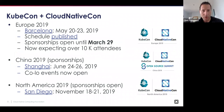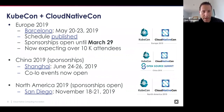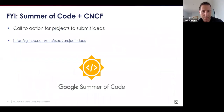Reminders on upcoming KubeCons: Barcelona is the immediate one — the schedule has been published, some sponsorships are available toward the end of this month. Attendance is tracking at a little over 10,000 folks, which is remarkable — about 3,000 had signed up even before the schedule went live. After Barcelona, KubeCon China and North America are coming up, so reach out if you're interested.